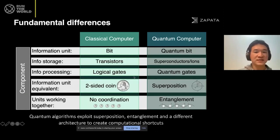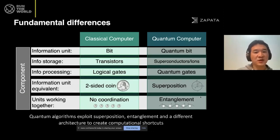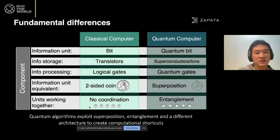Info processing is done by logical gates, and in quantum computers we have quantum gates. The information unit equivalent — you can think of a bit like a two-sided coin: it's either heads or tails, or zero or one. On the other hand, a quantum computer uses what's called superposition. With a coin you can only have heads or tails, but with a qubit you can have zero, one, and combinations of those two — 50% zero, 50% one. That's basically the idea, and we call that superposition.